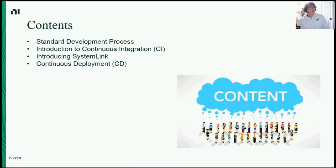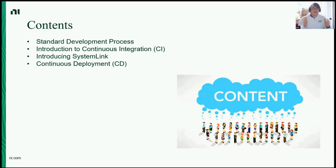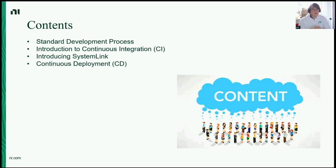Let's carry on with the actual presentation. We're going to look at development processes and how continuous integration can improve a lot of that — reduce the cost, improve your mental health, and really get the crunch time down at the end of a development cycle. Then we'll look at continuous delivery and continuous deployment, and how we can use SystemLink to close the gap from continuous integration to continuous deployment.